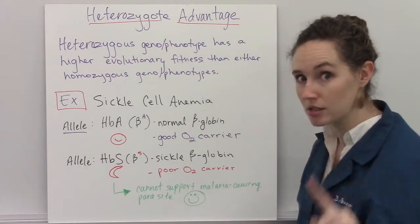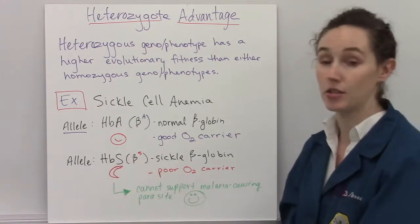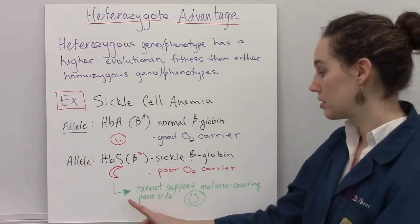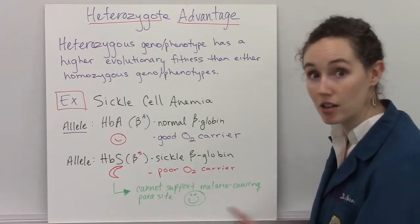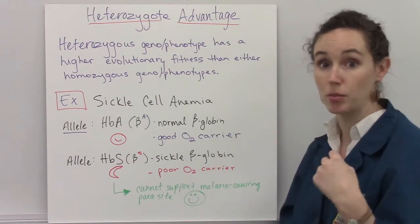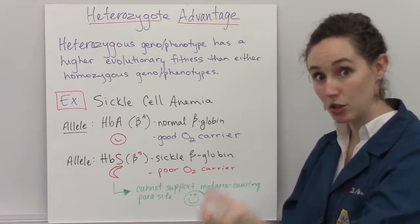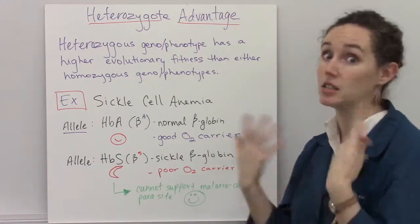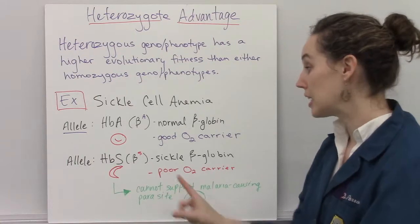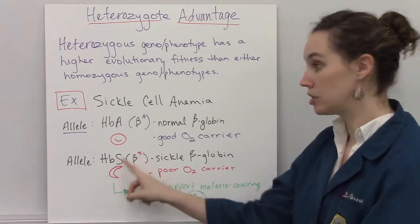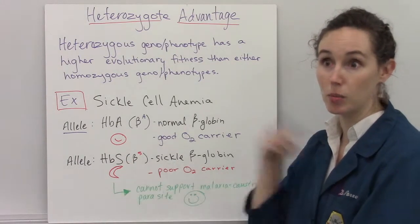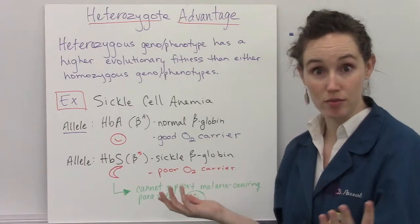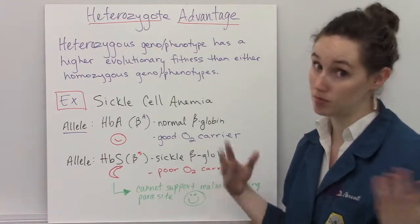There is one bonus to having sickle shaped cells that do not carry oxygen well: people with these shaped cells cannot support the malaria-causing parasite. Malaria is caused by a protist that gets into your red blood cells and lives there, making you very sick — you can even die from malaria. But if there's no oxygen in your cells, the parasite can't survive, so if you have sickle shaped cells, you can't get malaria.